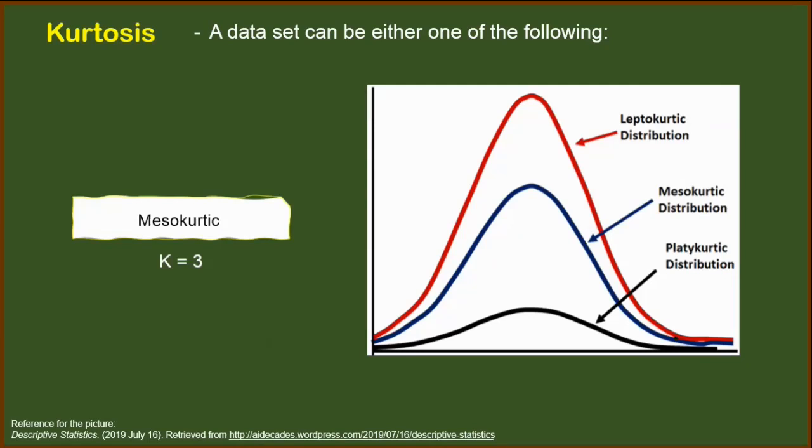Mesokurtic distribution can also be labeled as the normal distribution, the one that we have defined previously with a skewness of 0. For leptokurtic, still, it is symmetrical along the median and mode. It doesn't have any skewness, but its difference is it is more peaked as compared to the mesokurtic. So if you may notice the red graph here or the red distribution, it is higher in the middle part as compared to the mesokurtic.